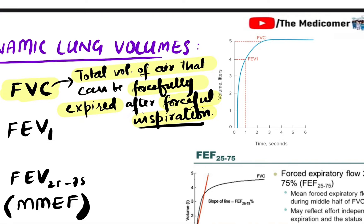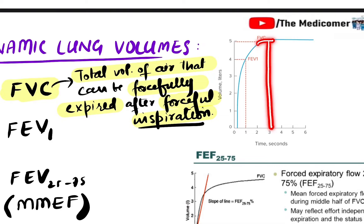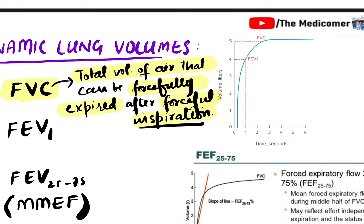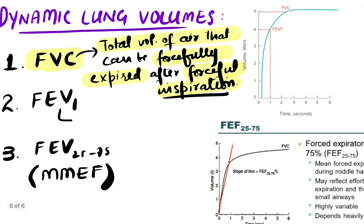What is significant is the forced vital capacity in the first second. This person takes three seconds to reach the forced vital capacity, but we measure the amount of air expelled in the first second. This is called FEV1 — the amount expired in the first second.